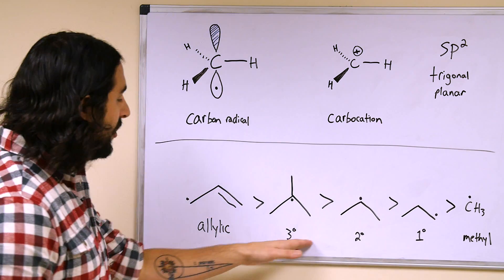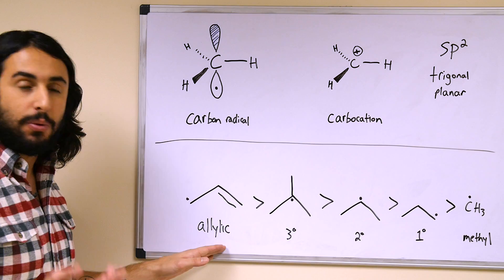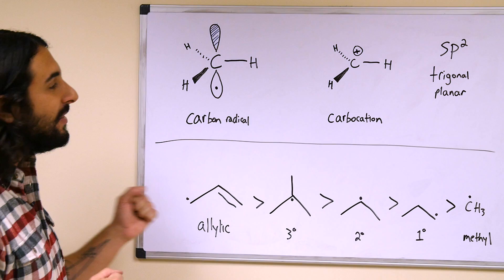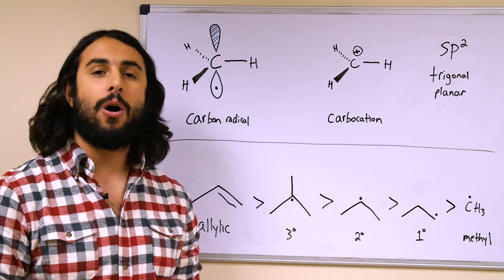And then the most stable is this allylic, just as with the carbocation we can have resonance here, so that is a stabilizing factor. So these are some things that we need to know about all radicals.